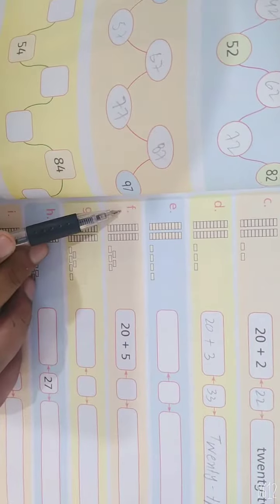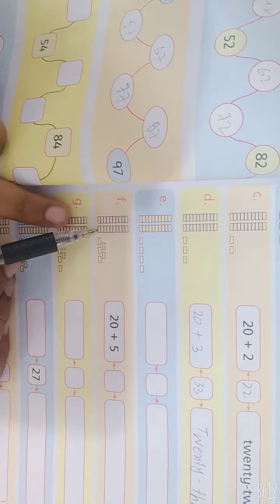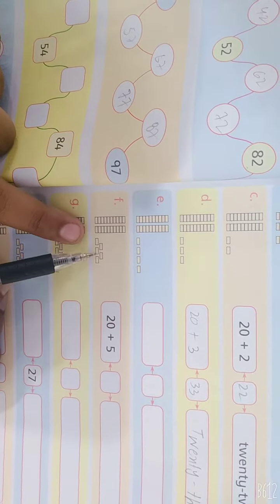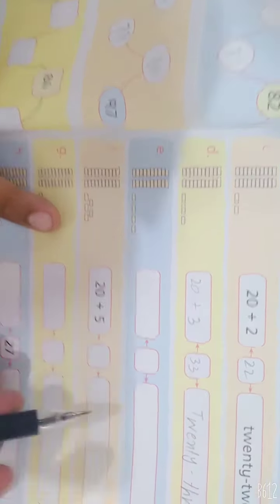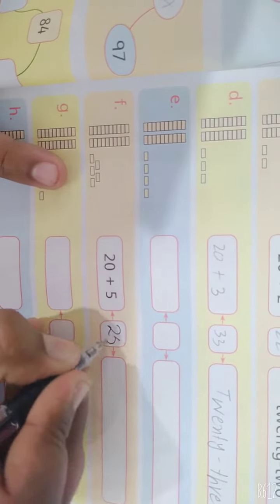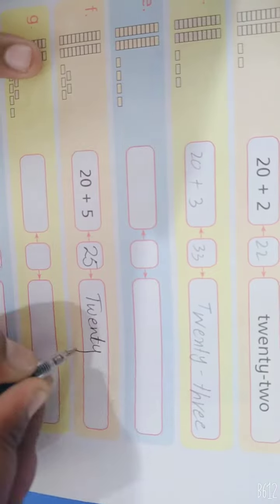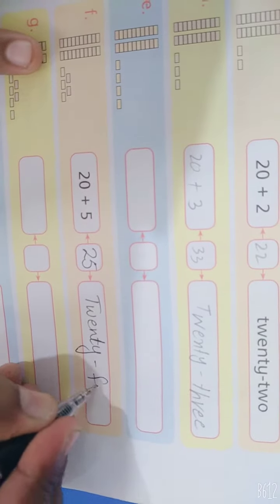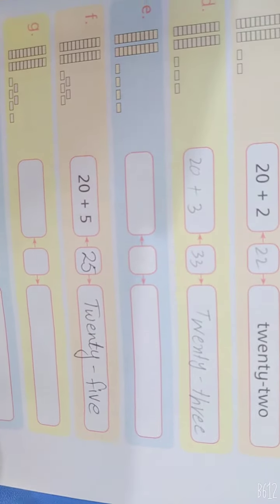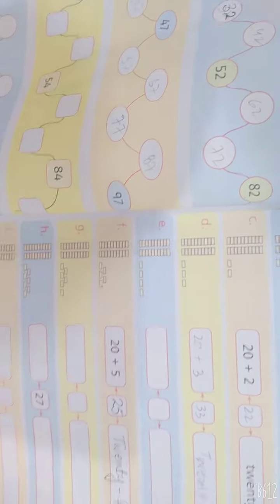F में देखें, two stacks 20 के है, one two three four five, five ones है, 25 and that makes T W E N T Y 25. Now you can solve this by yourself.